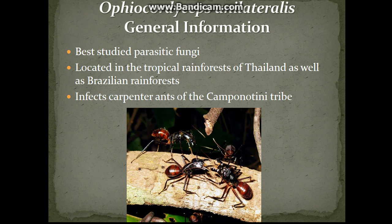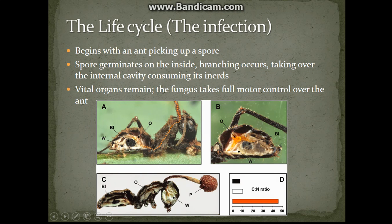The life cycle of Ophiocordyceps unilateralis is particularly interesting. It all begins when a spore from the fungus is picked up by an ant of the Camponotini tribe. The spore will penetrate the soft tissue of the ant and go through the tiny holes in its body known as spiracles. Once the spore reaches the inside, it will germinate and form a mycelium, which is essentially a network of vegetative mass consisting of thousands of branches known as hyphae.